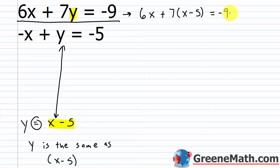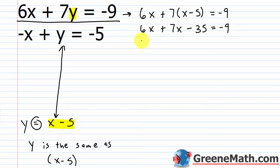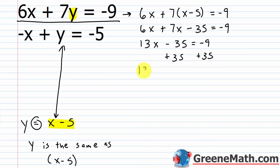Now I have a linear equation in one variable and can solve for x. Distributing: 6x plus 7x minus 35 equals negative 9. Combining like terms: 13x minus 35 equals negative 9. Adding 35 to both sides: 13x equals 26. Dividing both sides by 13: x equals 2.